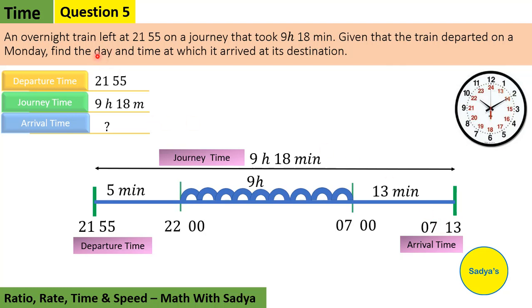And we're also asked to mention the day. If it left on Monday, it's overnight, so the next day would be Tuesday. So the train arrived at 7:13 on Tuesday. Happy Learning!